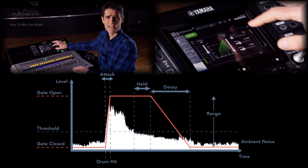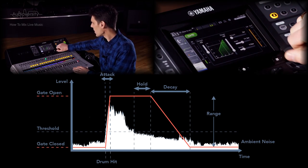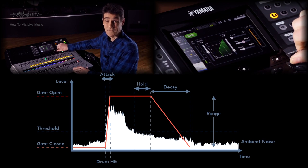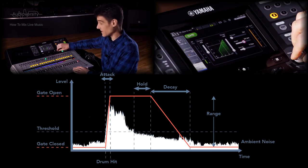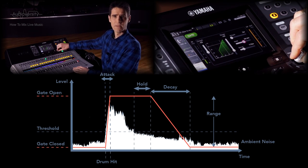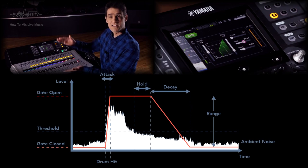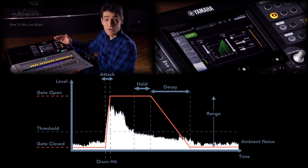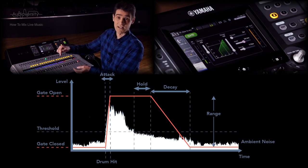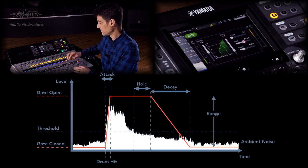Next, set the hold time around midway, between 20 and 50 ms. This determines how long the gate stays fully open after the sound starts to get quieter below the threshold level again.